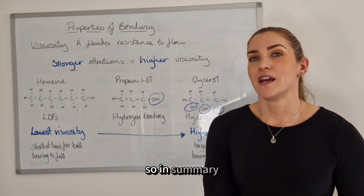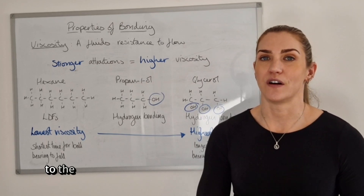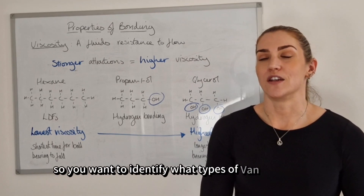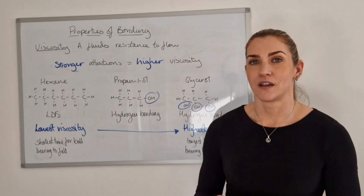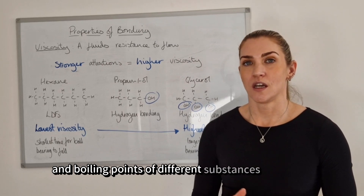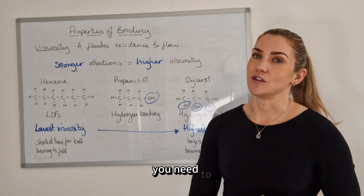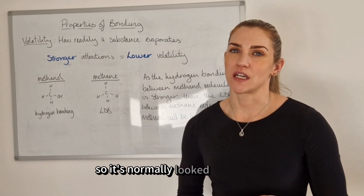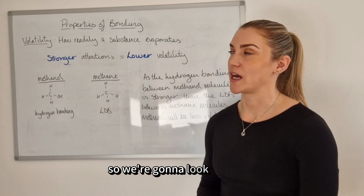In summary, when looking at the viscosity of different substances it comes down to the van der Waals forces occurring between the molecules — identify what types are present and which are stronger. This is very similar to explaining differences in melting and boiling points. We're also going to look at volatility, which is normally covered in unit 2 but ties into structure and bonding.